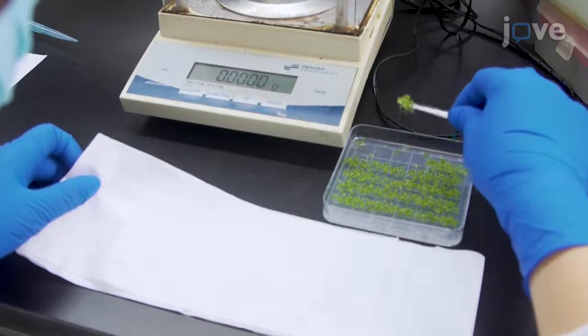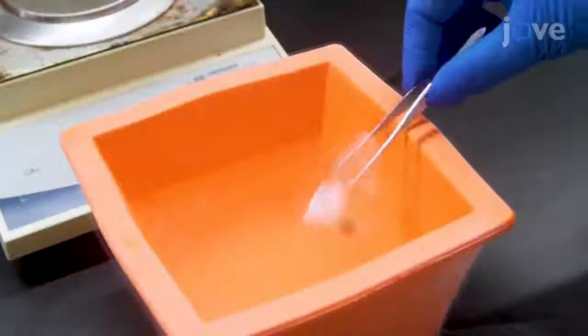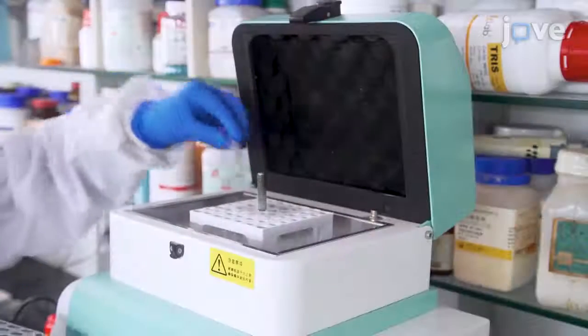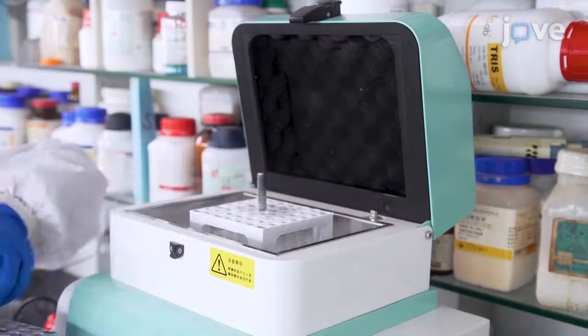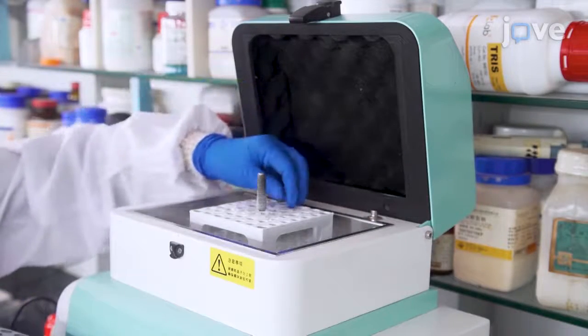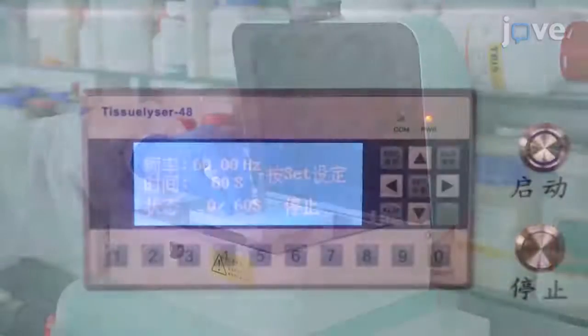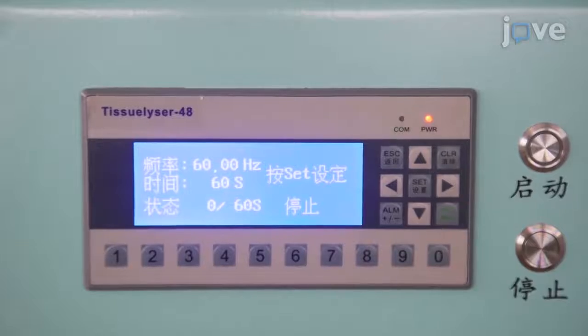Harvest 100 mg of 2-week seedlings and freeze them in liquid nitrogen for metabolite extraction. Grind 100 mg of frozen plant tissues with 7-8 steel beads in a pre-cooled mixer mill for 5 minutes at a frequency of 60 Hz.